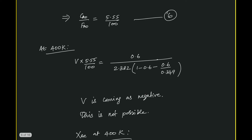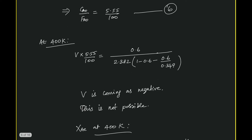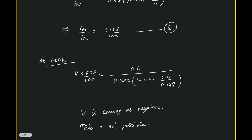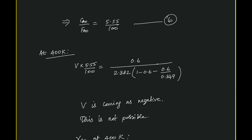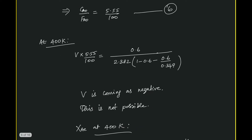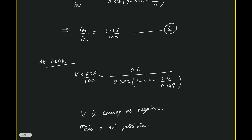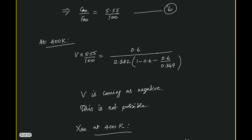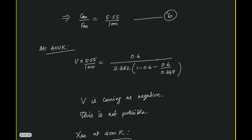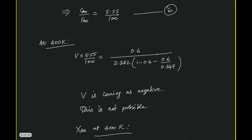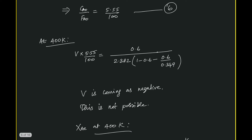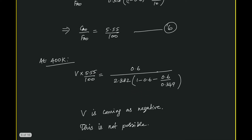Let us modify the problem. Instead of operating at 400 Kelvin, we will try to operate at 340 Kelvin. First, we check whether a conversion of 60% is possible at 340 Kelvin by finding the equilibrium conversion. We find K at 340 Kelvin using the available data, obtaining K = 2.06. From the relation Xae = K / (1 + K), the equilibrium conversion is 67.3%, which is greater than 60%, so the desired conversion is feasible.